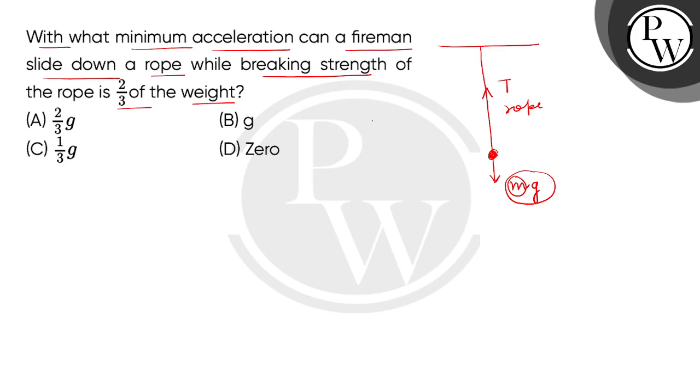We have given this rope, what is the breaking strength of this rope? We can think of the tension of the weight of the fireman, that is two-third of Mg. So this is equation number 1.